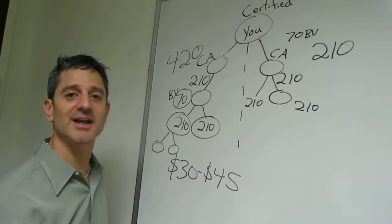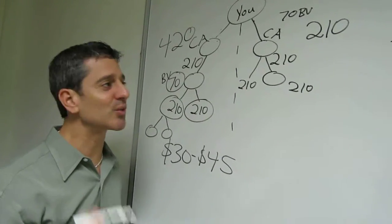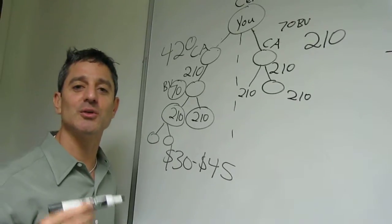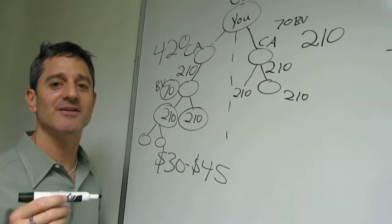210, 210, 210, instead of 70. It's three times more points, means you'll duplicate three times faster.